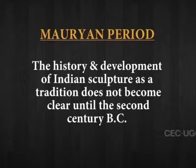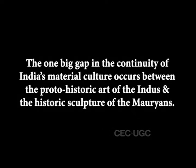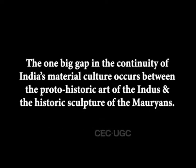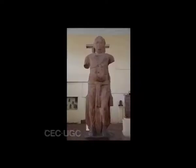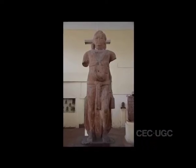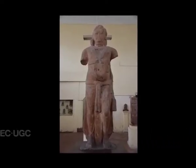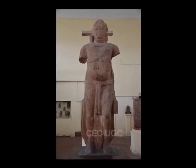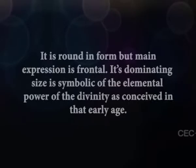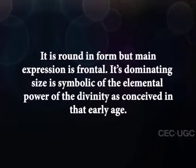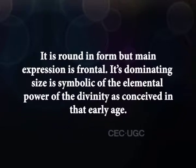The history and development of Indian sculpture as a tradition does not become clear until the second century BC. The one big gap in the continuity of India's material culture occurs between the proto-historic art of the Indus and the historic sculptures of the Mauryans. About the fourth century BC, we come across monuments of stone in the form of colossal Yaksha images, of which the one from the village of Parkham is round in form, but its main expression is frontal. Its dominating size is symbolic of the elemental power of the divinity as conceived in that early age.